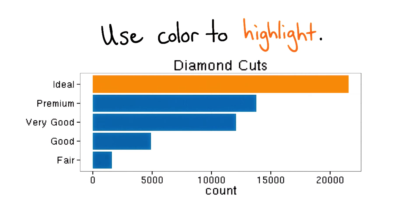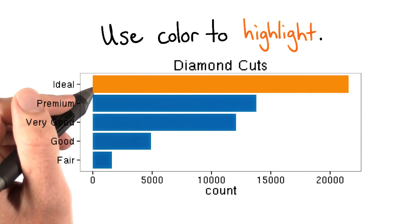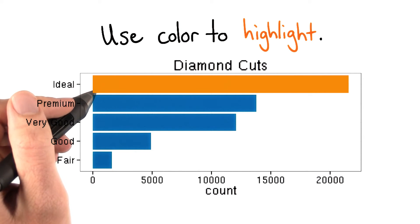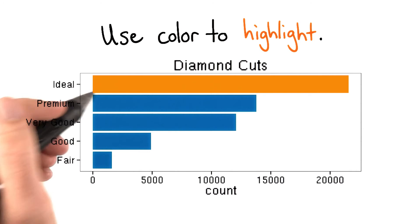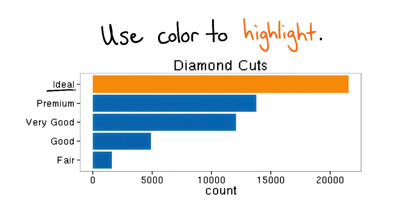My final tip is to make color selections that facilitate communication. In this example, I used a complementary color to draw attention to the count of ideal cut diamonds. You could use a similar strategy if you want to highlight particular data points in a graphic.